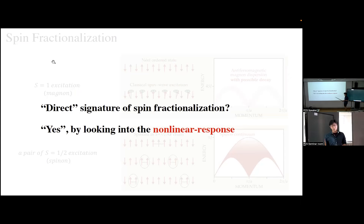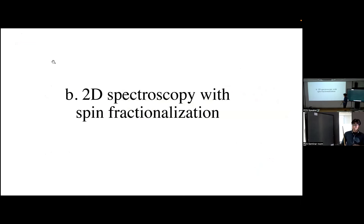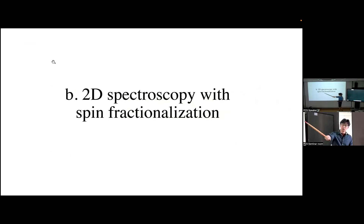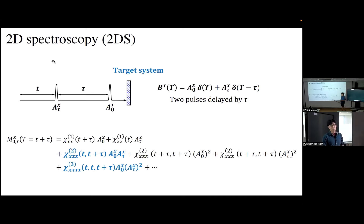We can directly signature spin fractionalization, but we have to go beyond the linear response — beyond the dynamic structure factor or neutron scattering — and measure a different quantity, the nonlinear response. To measure this nonlinear response, we need to introduce a different experimental setup called 2D spectroscopy, a technique first demonstrated in 2017.